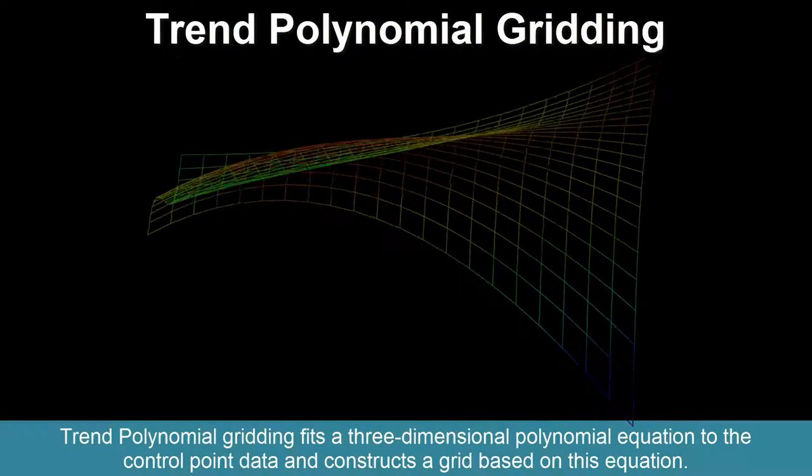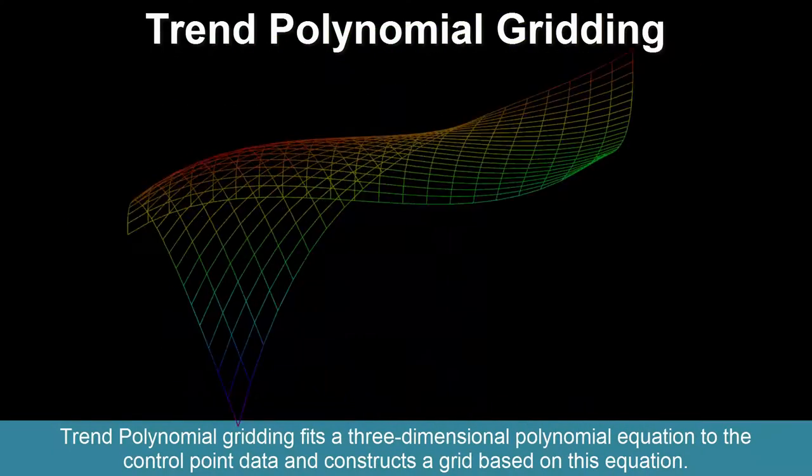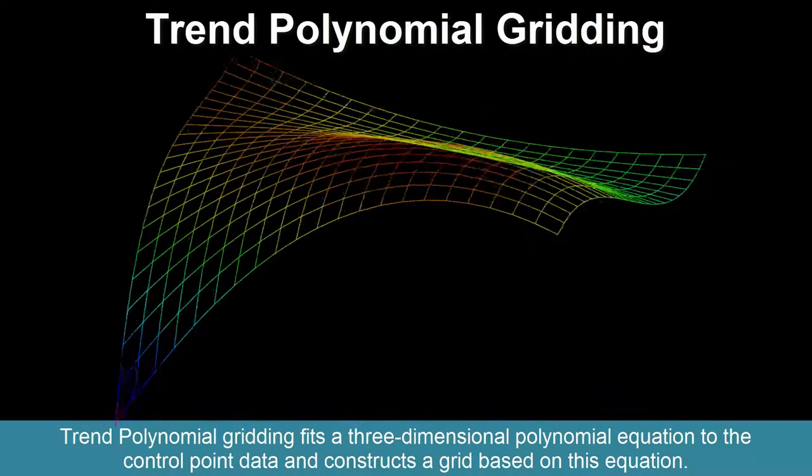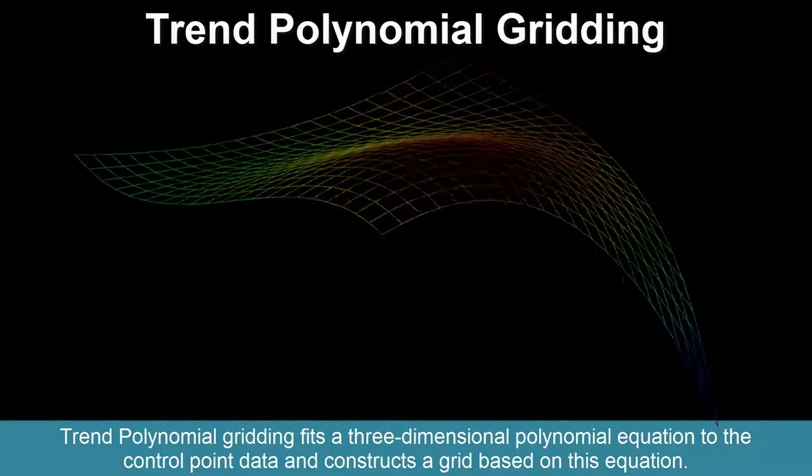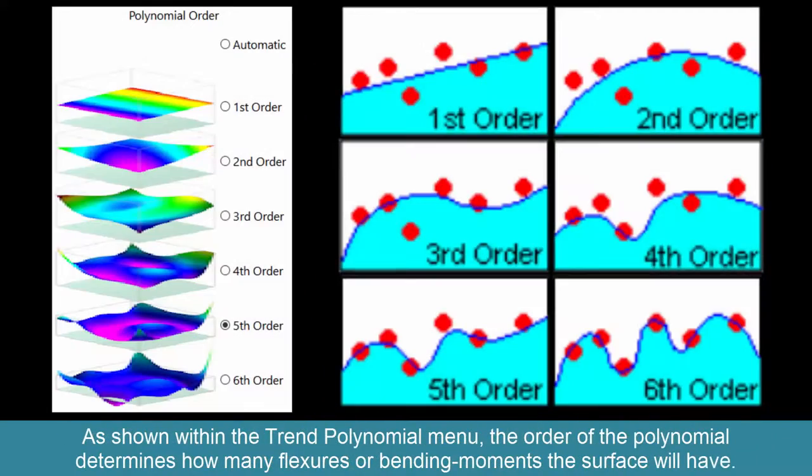Trend polynomial gridding fits a three-dimensional polynomial equation to the control point data and constructs a grid based on this equation. As shown within the trend polynomial menu, the order of the polynomial determines how many flexures or bending moments the surface will have.